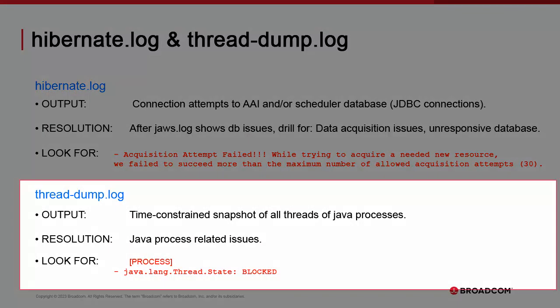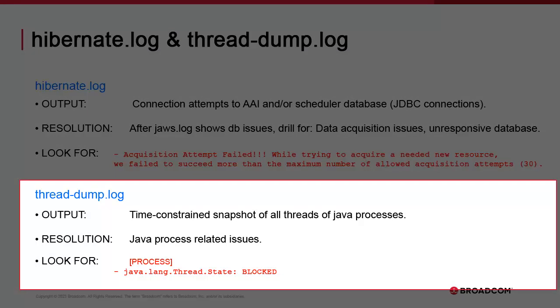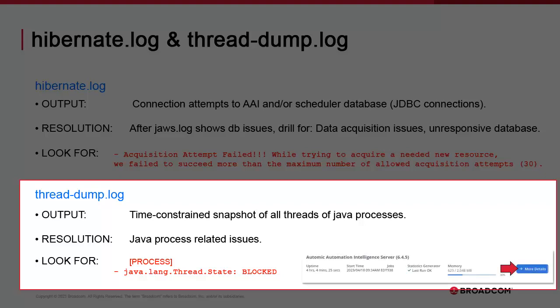You can also activate the Thread Dump feature on a temporary basis to generate a snapshot of Java threads. You have to enable Thread Dump in the Web UI version 2. Next to the server, you click More Details, and then Start Thread Dump. Then run through the behavior once more to capture the Java process threads. This adds considerable load on the system, so it's important to turn it off when you're done. Look for the blocked entries, identify the process, and then investigate through the support site or with the service team. This is particularly effective for REST API issues.